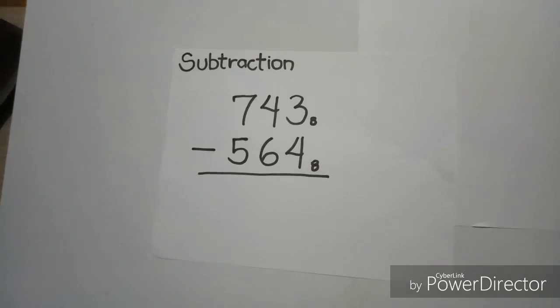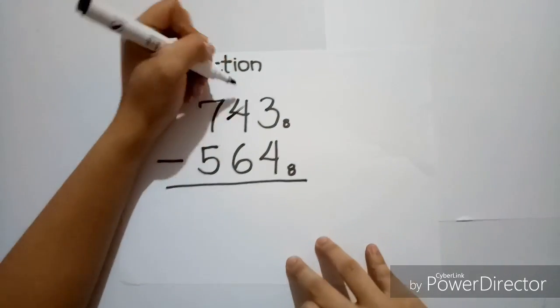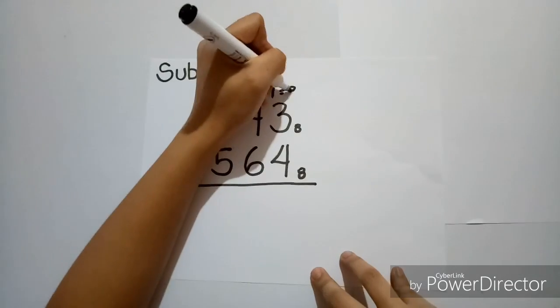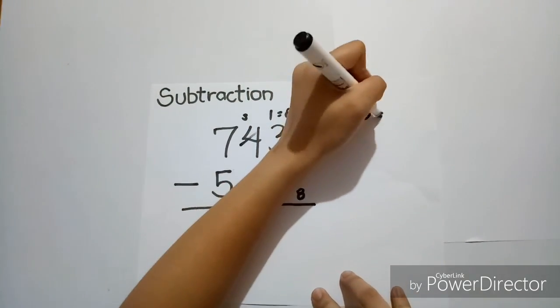Now, since we can't subtract 4 from 3, we'll have to borrow. And since 1 is equal to 8, 8 plus 3 is equal to 11.